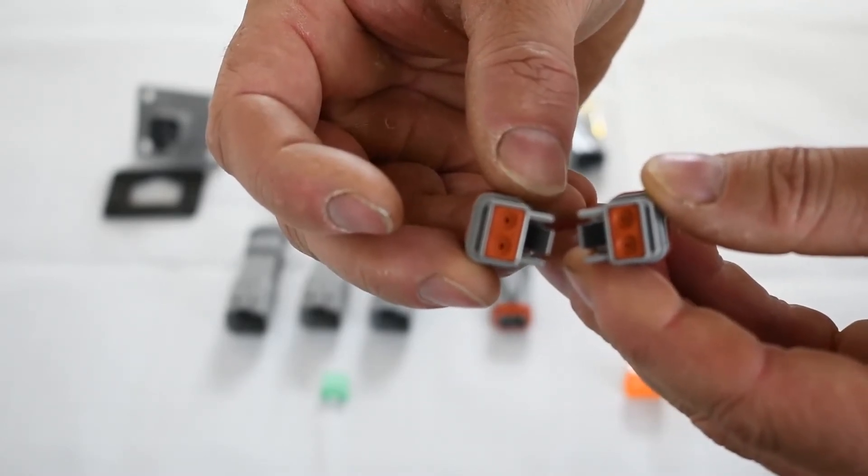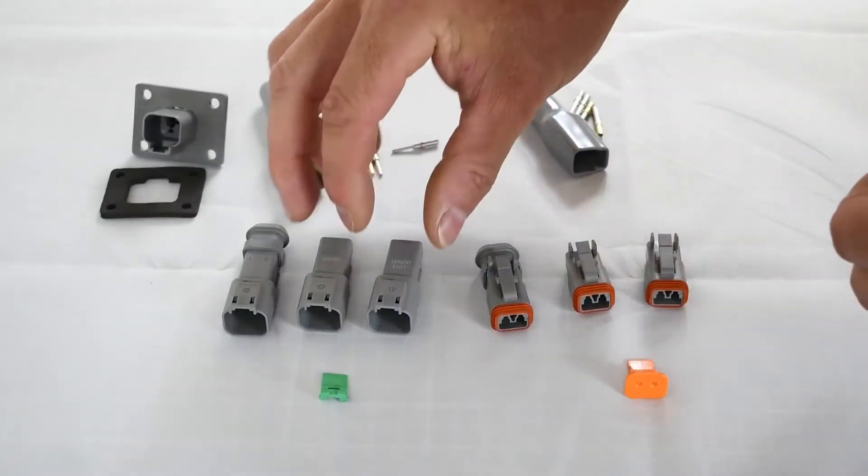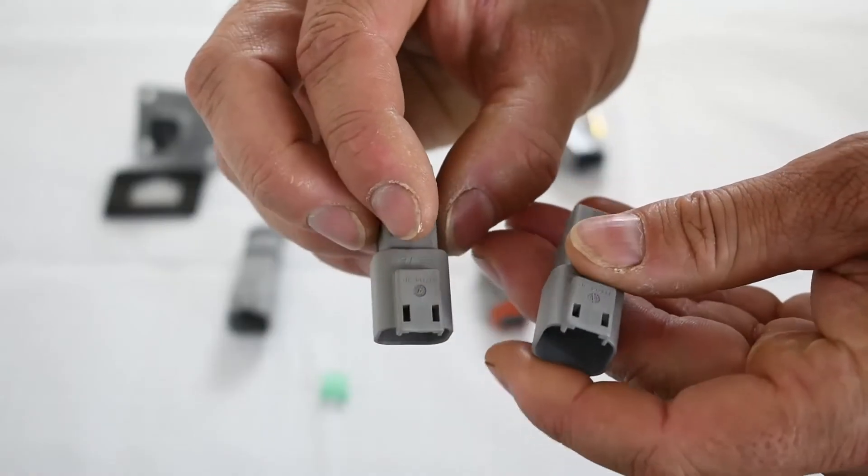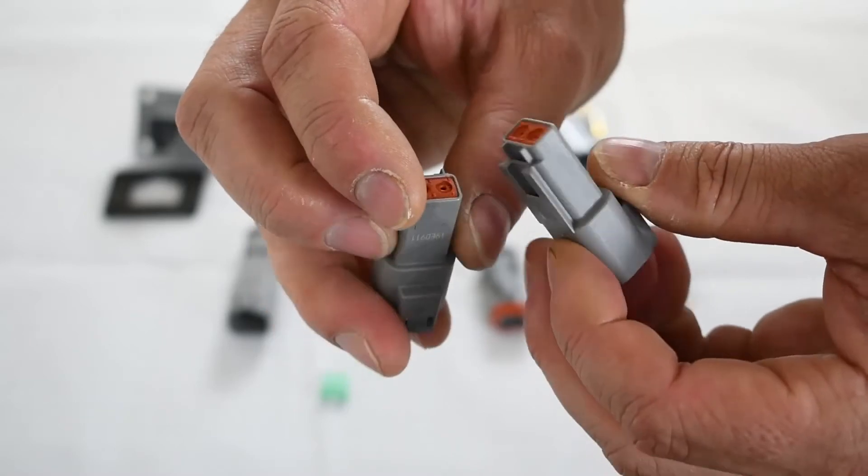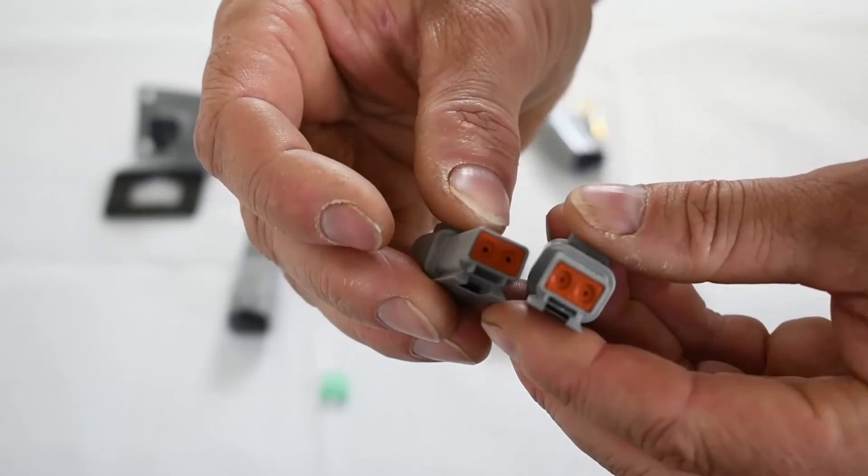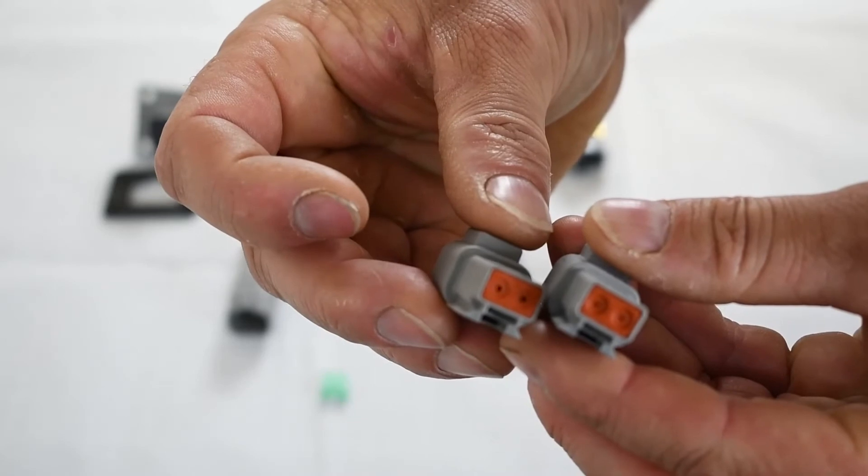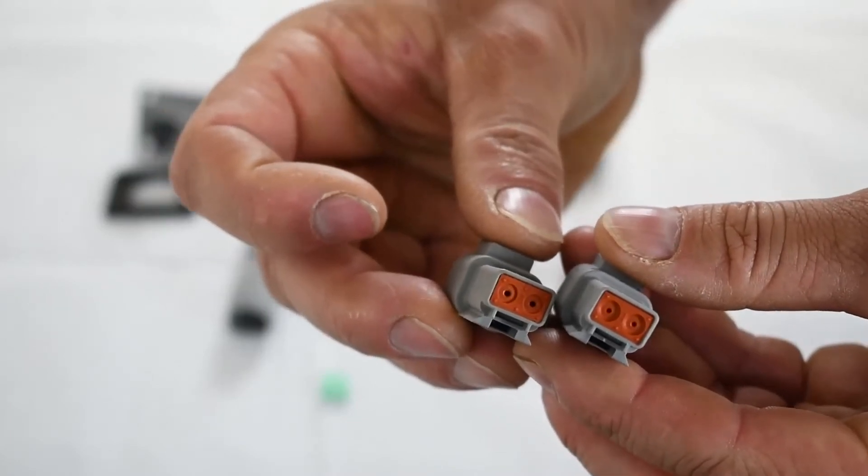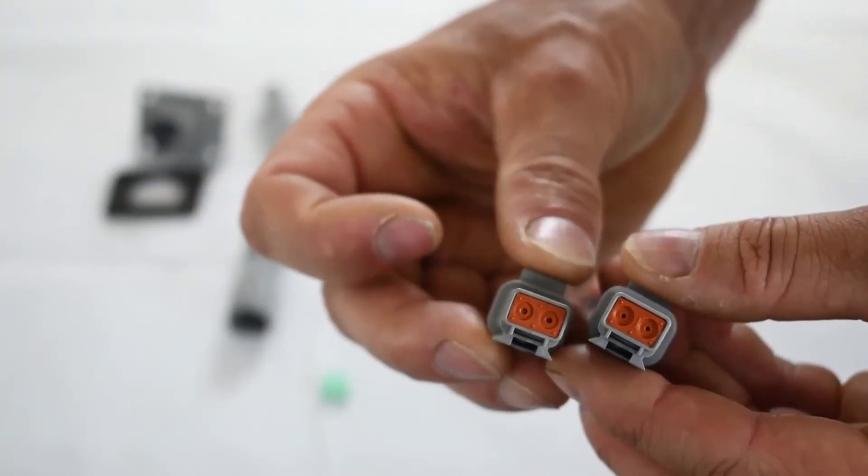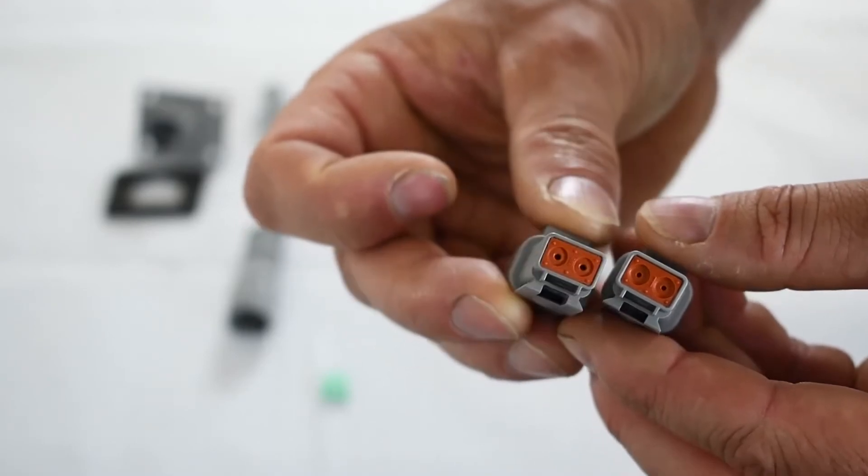Now they offer the exact same on the reverse side, so on the receptacle. This is the Deutsch DT receptacle. The only difference between these two being the seal at the end. So one is standard, the larger hole. The other one has an enhanced retention seal in a smaller hole.